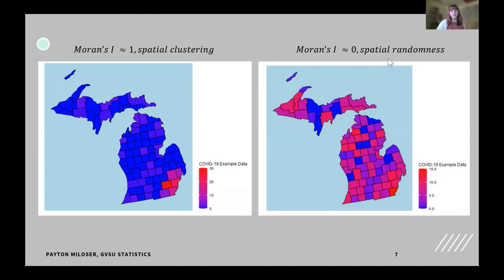Whereas when Moran's i is closer to zero, we have what is called spatial randomness. You can see this because we can't see a distinct pattern on here and there's no clear indication of an outbreak happening. We just see a lot of different colors and a lot of different ranges. So, when Moran's i is closer to zero, that's what that looks like. And when it's closer to one, we are probably better off trying to predict an outbreak.